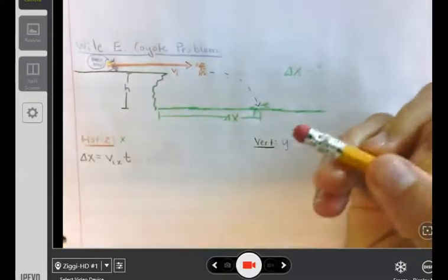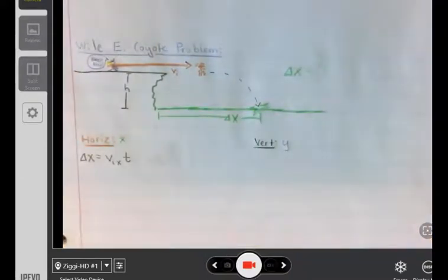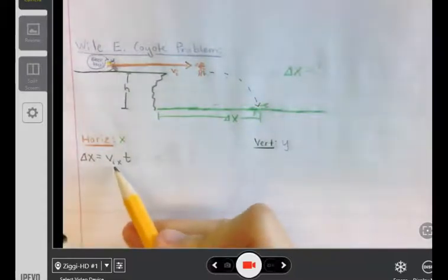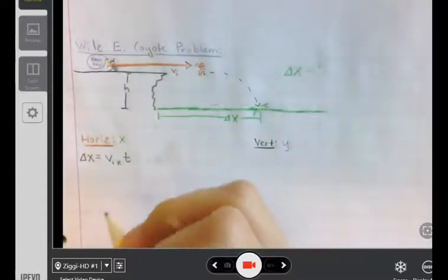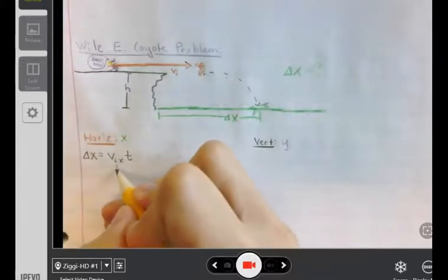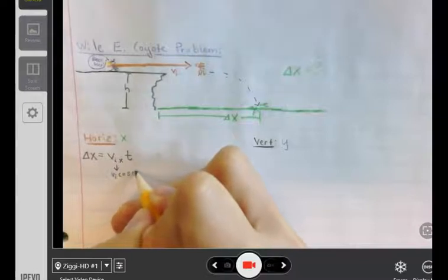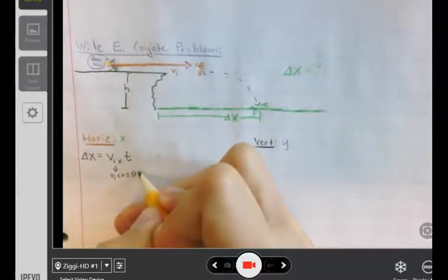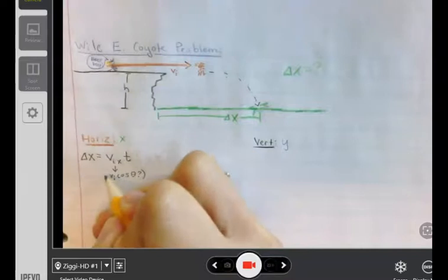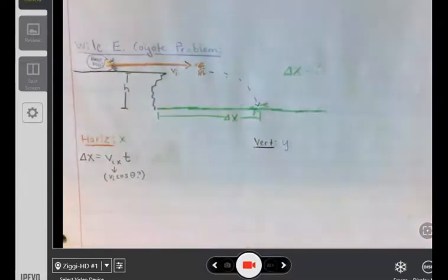And now everybody's formula looks the same. Now you can expand VIX with VI cosine theta if there is a theta. Is there a theta in this problem? No. Then is it worthwhile writing VI cosine theta? No. There's nothing wrong with writing it, it's just not going to get you any further.